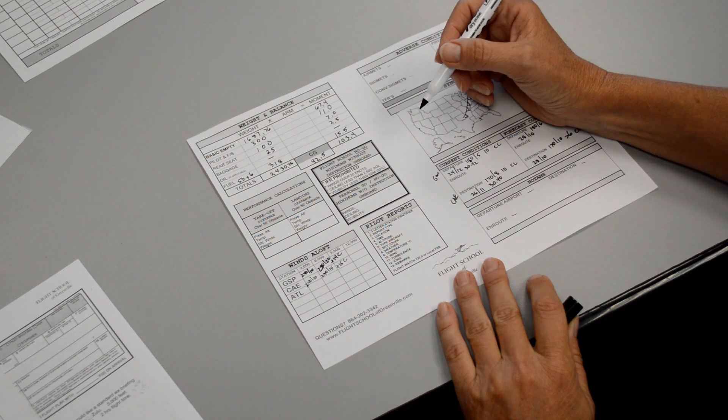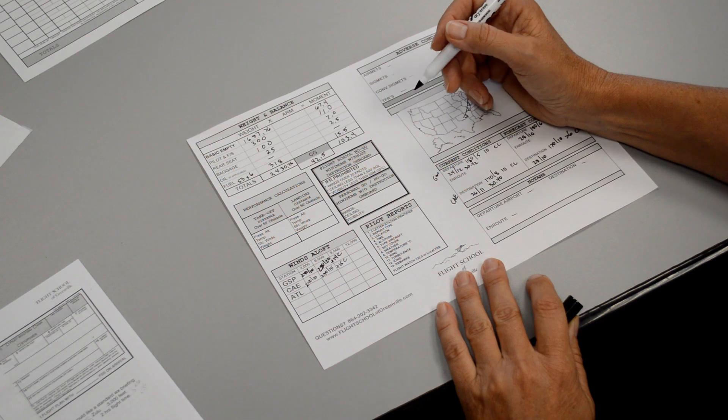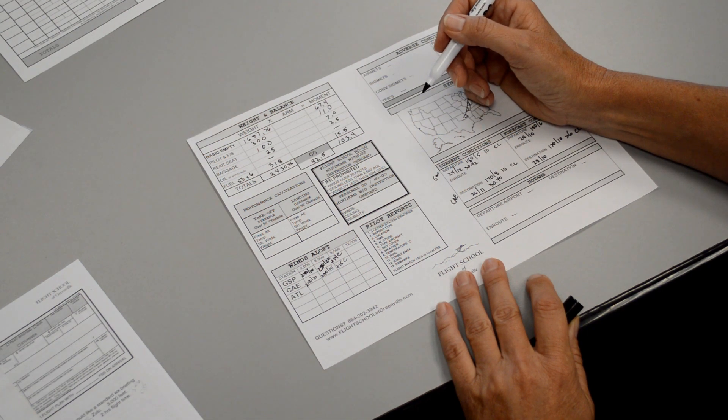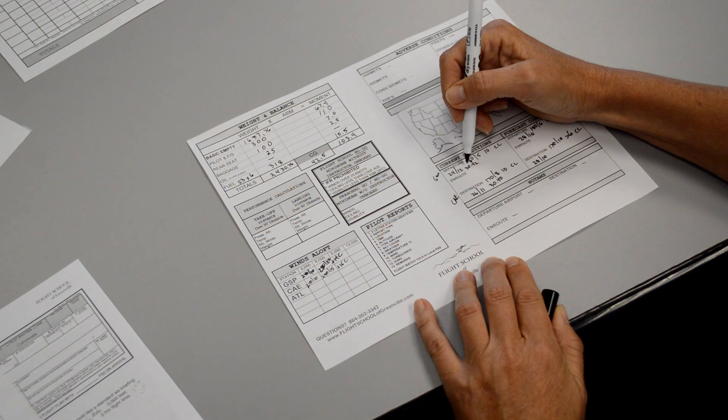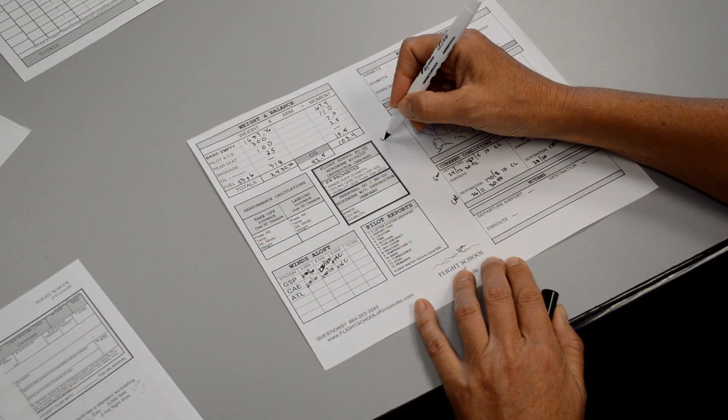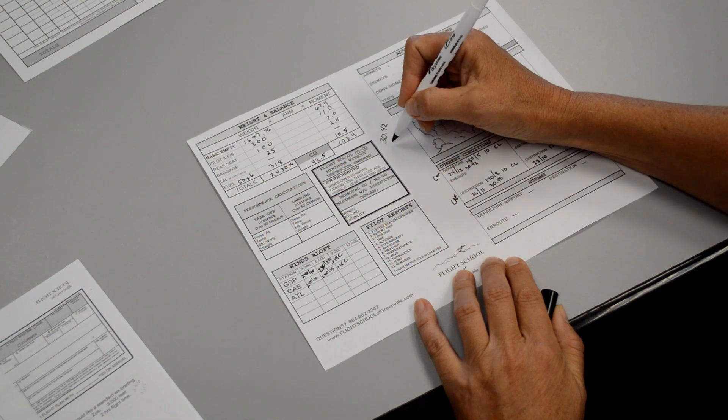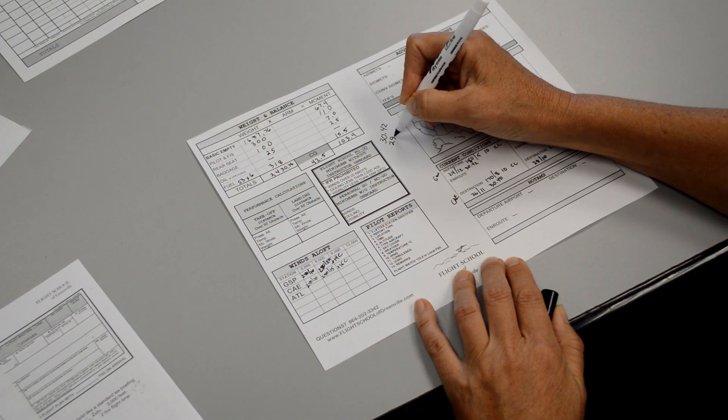But we need our pressure altitude to go to the performance charts to pull out the numbers that we'll need to calculate out our plan. The flight service station briefer gave us a pressure of 30.42, and standard pressure, remember, is 29.92.